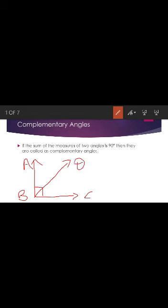Now, students, what you have seen here? Two angles: the first angle is angle ABD, and the second angle is angle DBC. We know that the whole angle ABC is equal to 90 degrees, but now this 90-degree angle is divided into two angles — angle ABD and angle DBC.